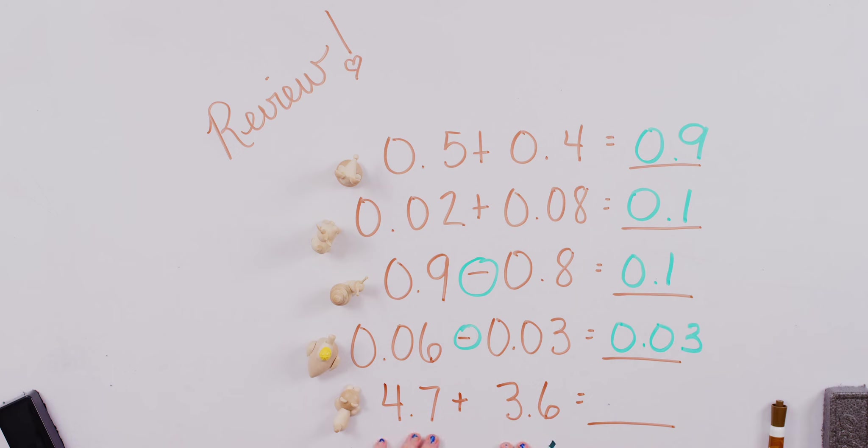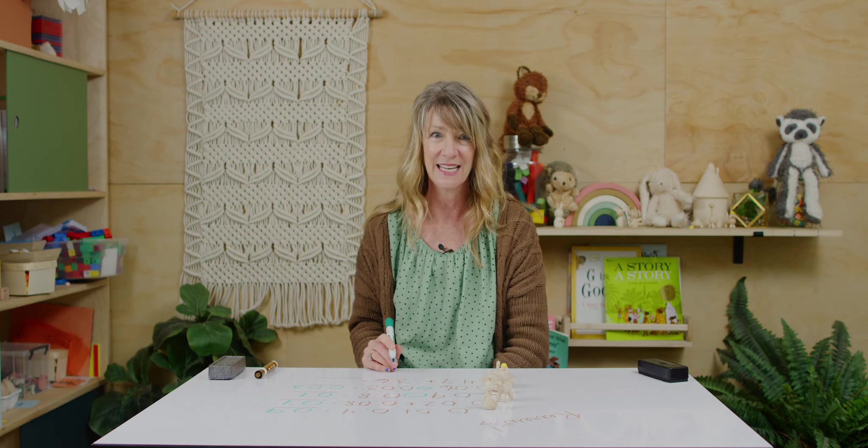Okay, last one's a little bit different, but I still want you to try to use mental math. This is Kat's problem. Four and seven tenths plus three and six tenths. You have a couple different ways you can go, so think about it. Ready, set, go.